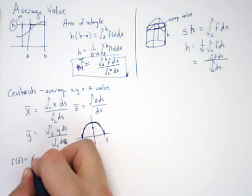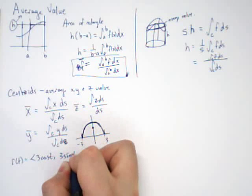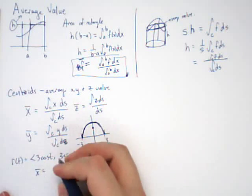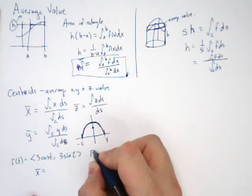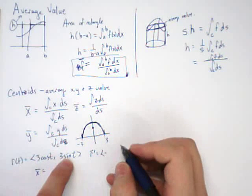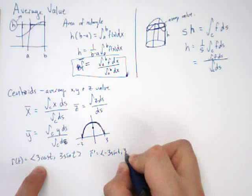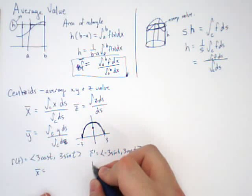So if our curve is 3 cosine t, 3 sine t, then if I want to find X bar, X bar is simply, well, in order to do this, I need a parameterization, which means I need to find R prime. R prime is negative 3 sine t, 3 cosine t.